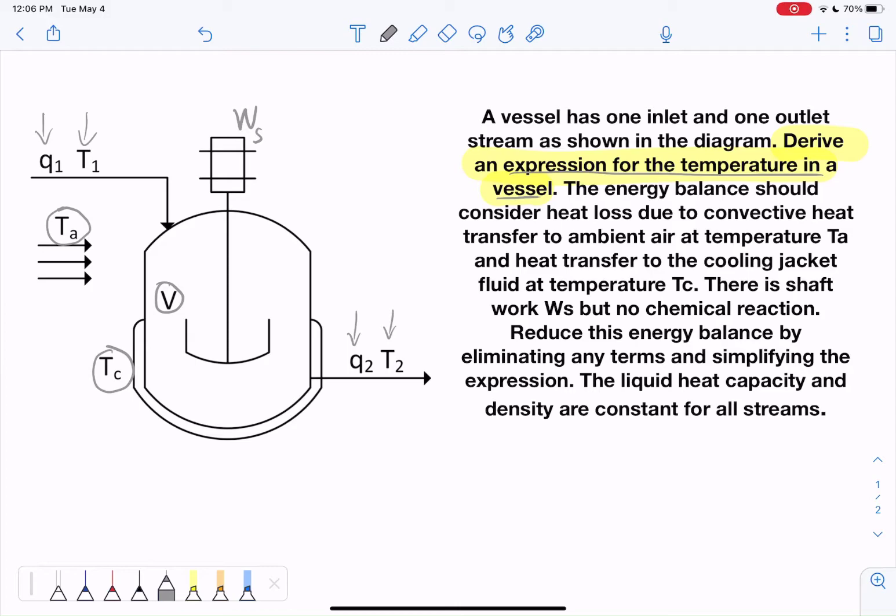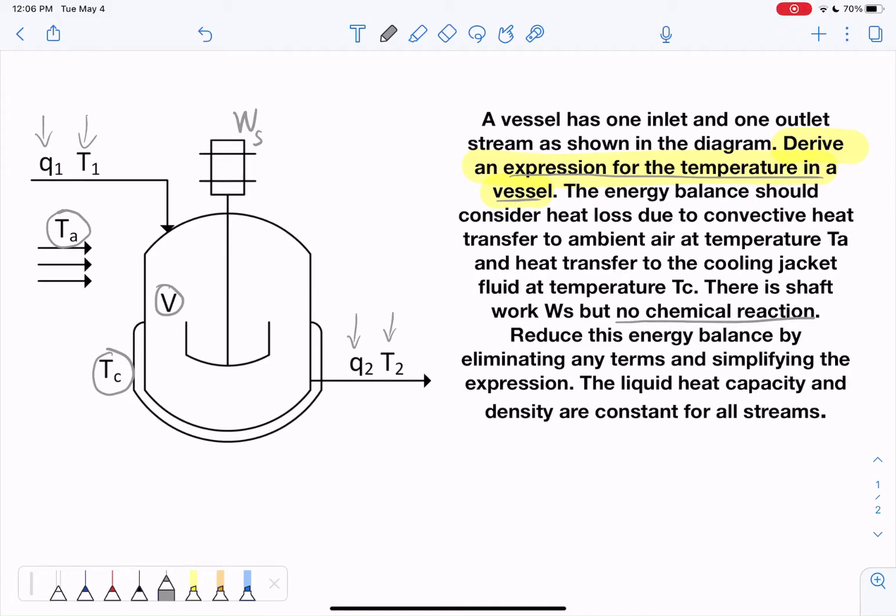Okay, let's move on to number three, list all assumptions. Well, let's look at our prompt first. Especially as a student, that's a good place to go for our assumptions. Energy balance should consider heat loss due to convective heat transfer and the cooling jacket. There is shaft work, but no chemical reaction. So I'll go ahead and underline that. No chemical reaction. Reduce this energy balance by eliminating any unneeded terms. Liquid heat capacity and density are constant. So those are some good ones to start out with.